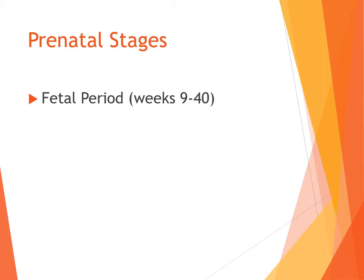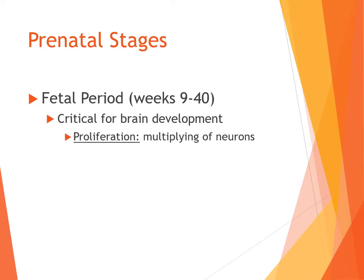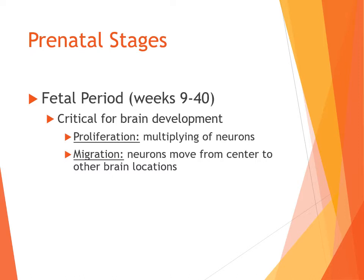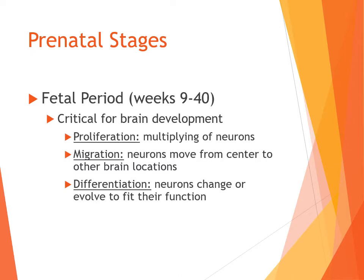In the fetal period, about week nine to forty or birth, this is the critical period for brain development. We have all major organs forming during the embryonic period, and during the fetal period we really see brain development. There is proliferation — neurons are being generated and multiplying at a rapid pace. We also see migration, where neurons created in the center of the brain move outward toward locations where they're needed. Then in differentiation, neurons arrive at their destinations and adapt to fill the function of wherever they are.